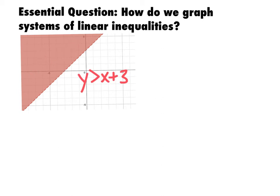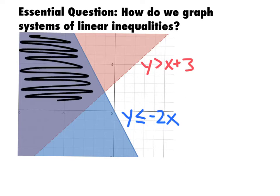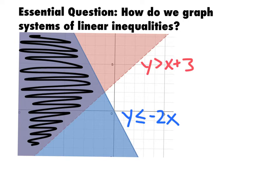So what does a system of these look like? Whenever we graph a system of linear inequalities, we really just graph each inequality and shade their solutions. Then this region where the shadings intersect — all of these points are solutions to the system. Any point inside this dark shaded region will satisfy both y is greater than x plus 3 and y is less than or equal to negative 2x.